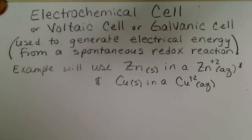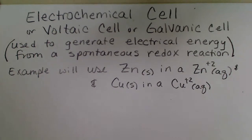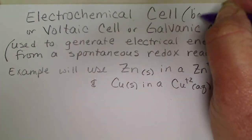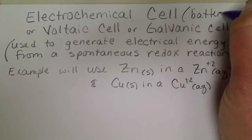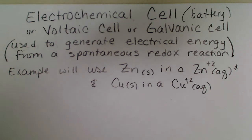In this video we're going to draw a picture of an electrochemical cell. It may be referred to as a voltaic cell or a galvanic cell, and most commonly we would just call this a battery. It's used to generate electrical energy from a spontaneous oxidation-reduction reaction, and the example we're going to use is zinc.